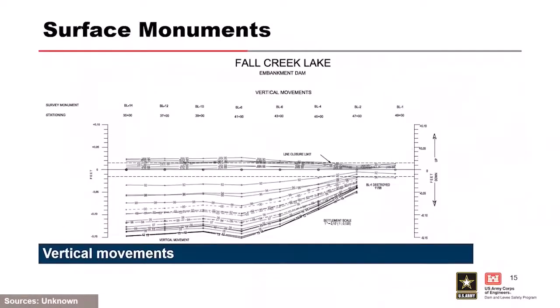This plot from Fall Creek Lake shows vertical movement at the surface of the structure, with survey data plotted over many years. The deflections are on the order of 0.15 feet of settlement along the centerline. You're looking for low spots, and in a risk analysis you'd be asked about the most recent survey data. You're also looking for anything irregular, which could indicate differential settlement — one location showing additional settlement relative to others needs to be evaluated.